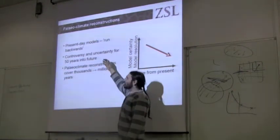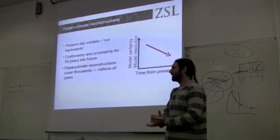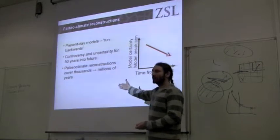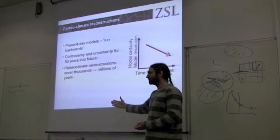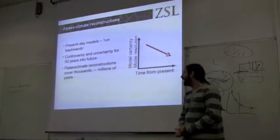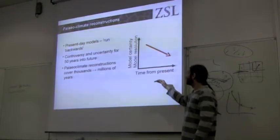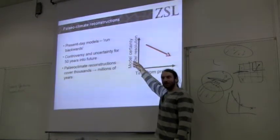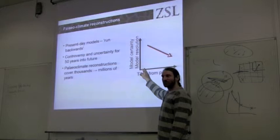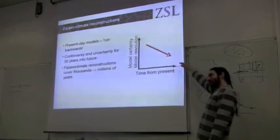We've all seen controversy over future model projections estimating the climate difference between now and 50 years' time — but 50 years isn't very long. With paleoclimate reconstructions we're estimating climate not 50 years ago but 5,000, 20,000, or even 5 million years ago. There's a general principle that the further from the present, either in future or historical time, the less model certainty and generally the coarser the resolution. Reconstructions of the K-T boundary carry massive extra uncertainty.